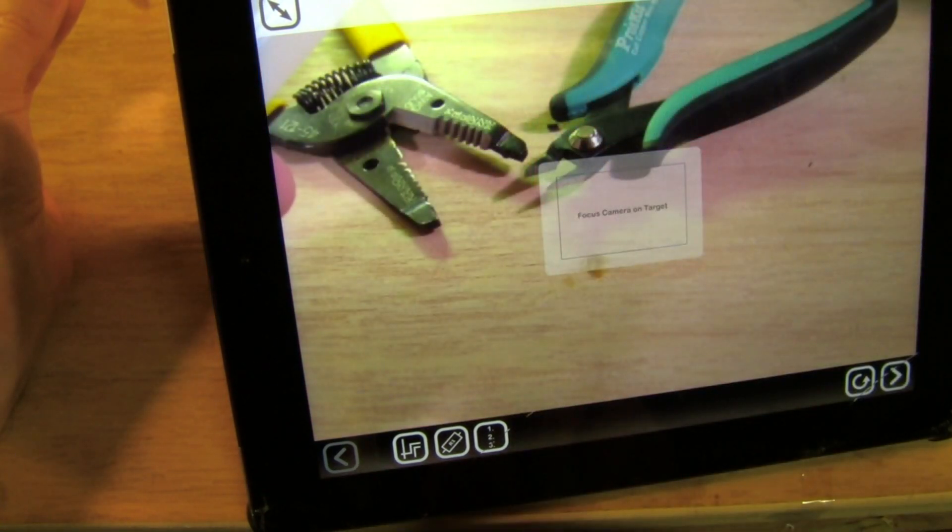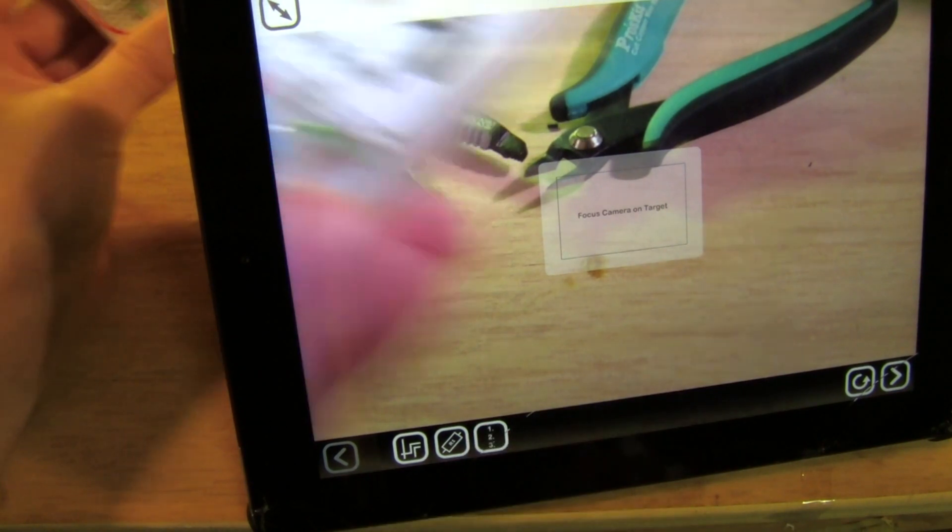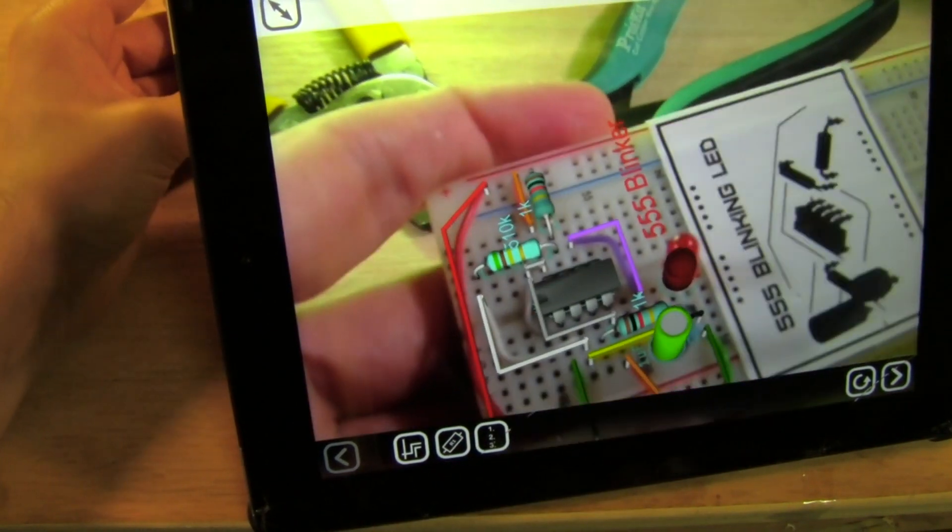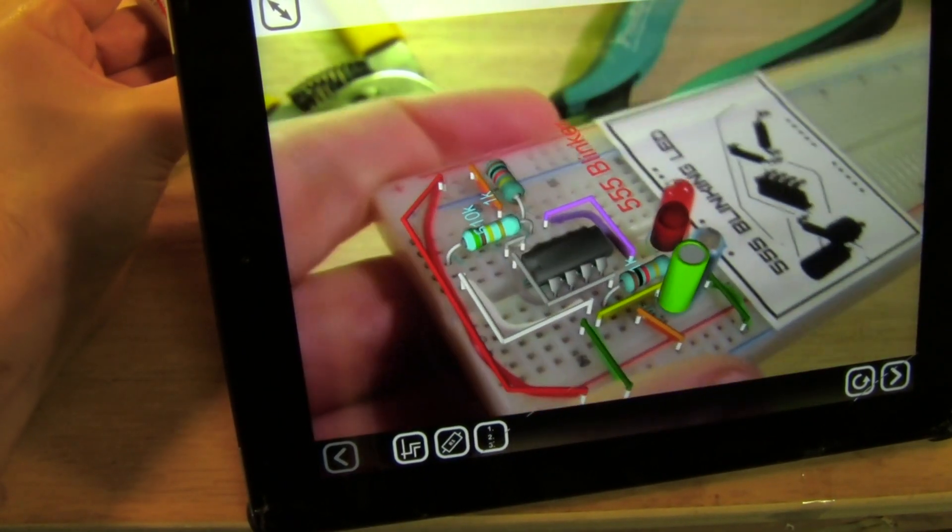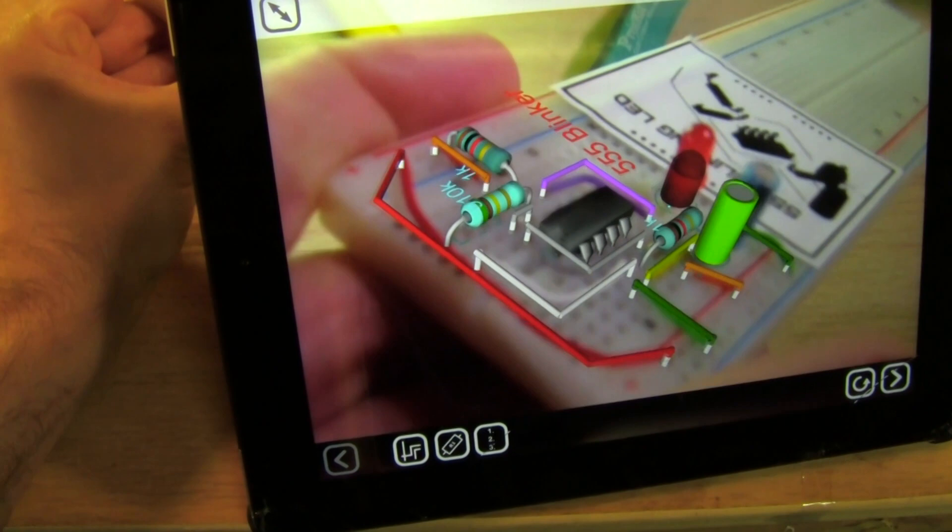Another way to check the circuit after it's done is to overlay 3D parts on top of everything. So here I've got wires and 3D components all sitting on the board.